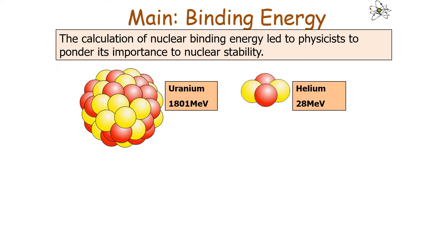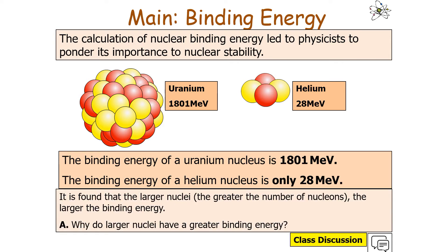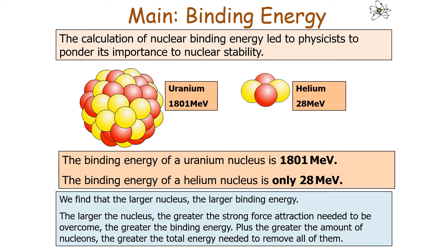We'll now consider why binding energy is so important. The calculation of nuclear binding energy led physicists to ponder its importance to nuclear stability. Comparing uranium, the largest naturally occurring nucleus, and helium, the smallest nucleus containing neutrons: the binding energy of uranium is 1,801 MeV, whilst helium's is only 28 MeV. Larger nuclei have greater binding energy because a greater strong force of attraction must be overcome, and more total energy is needed to remove all the nucleons.